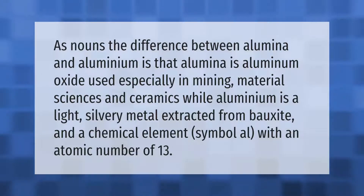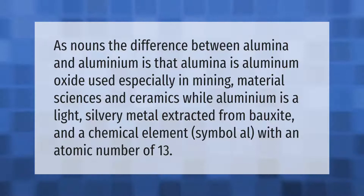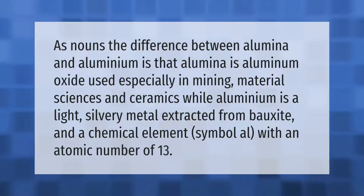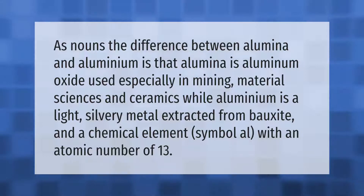As nouns, the difference between alumina and aluminium is that alumina is aluminum oxide used especially in mining and material sciences and ceramics, while aluminium is a light silvery metal extracted from bauxite and a chemical element with symbol Al and an atomic number of 13.